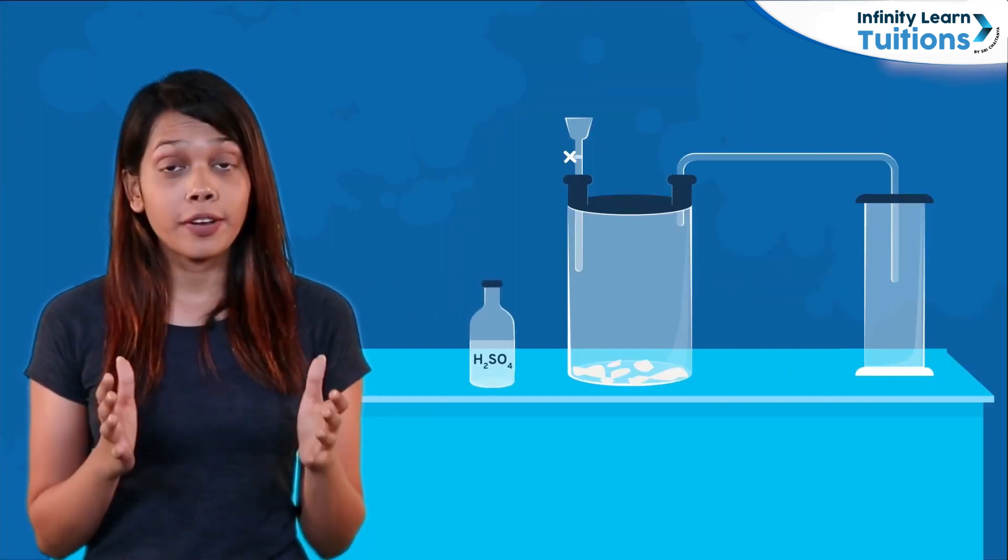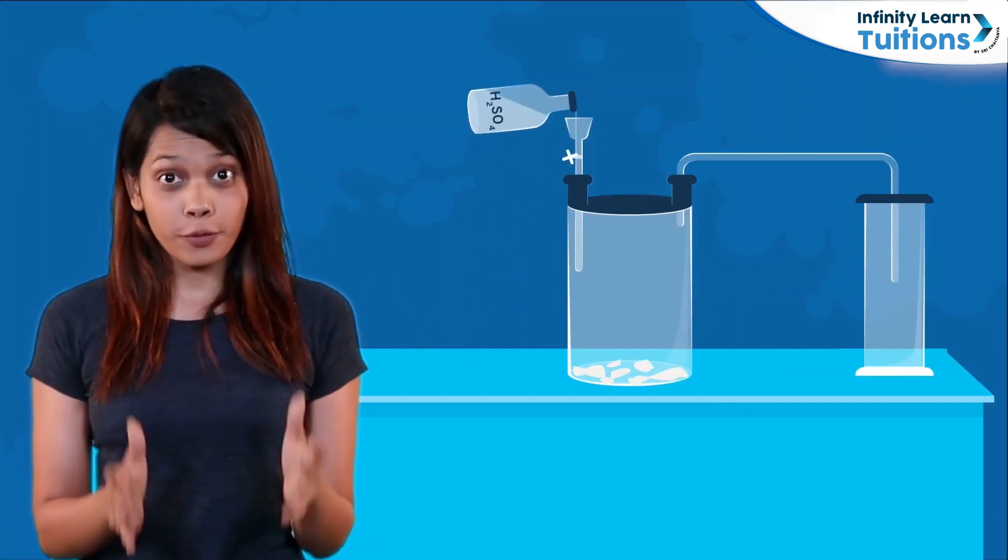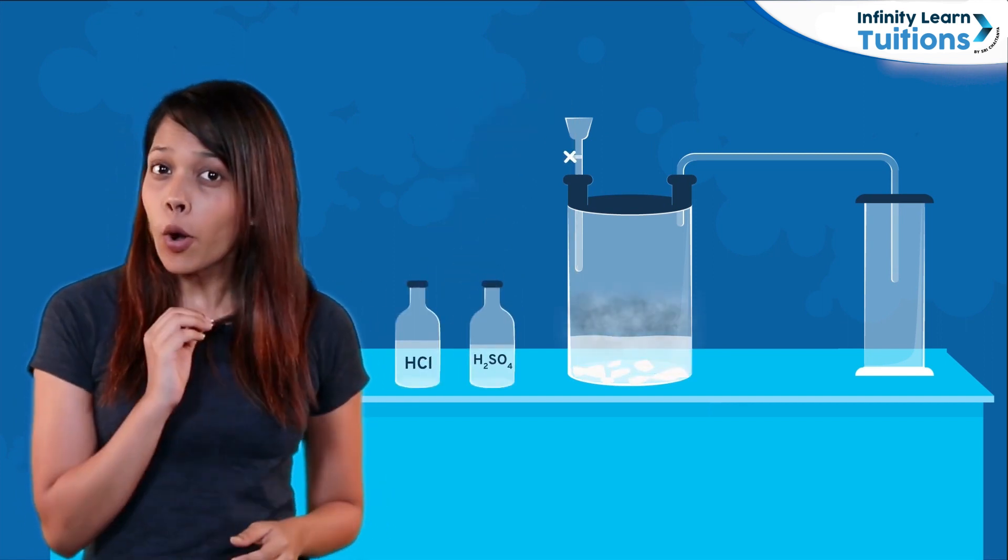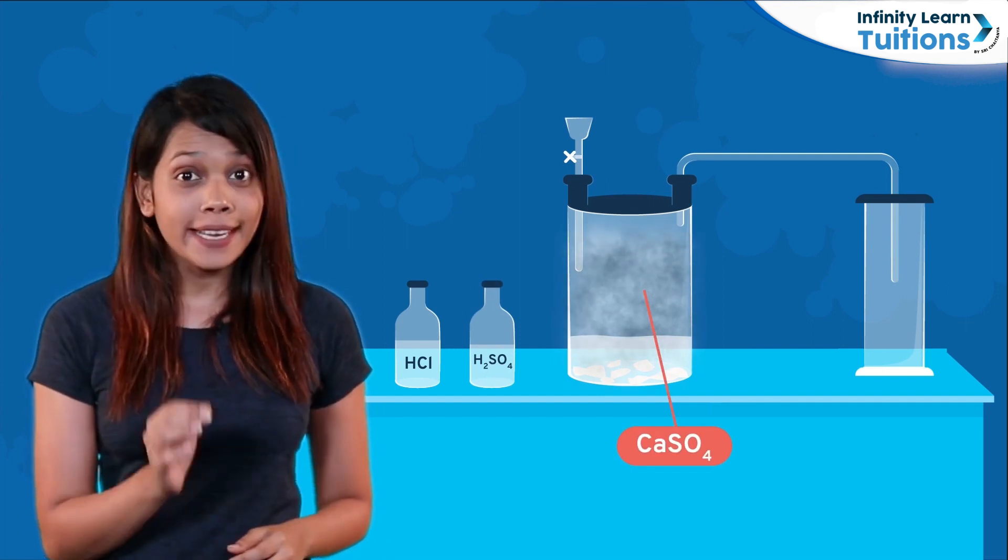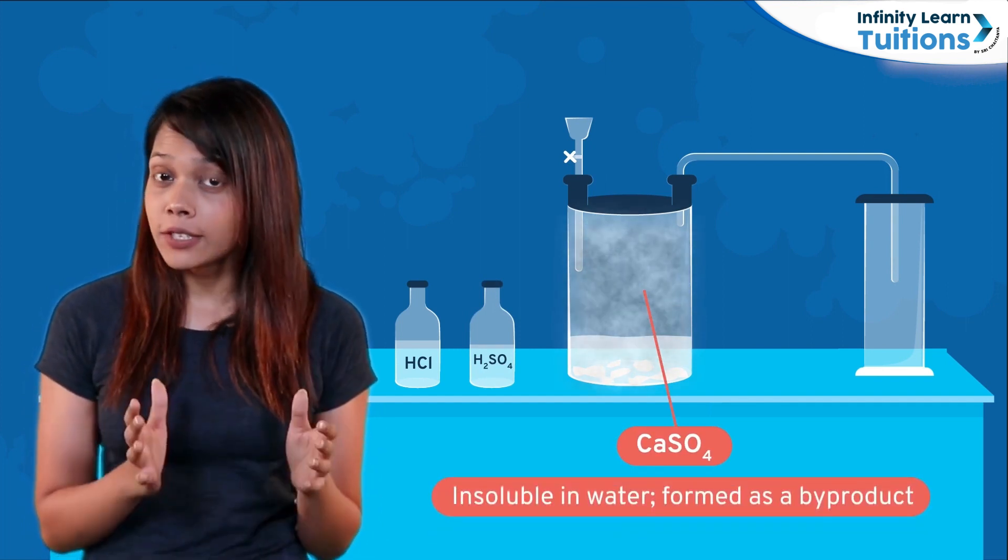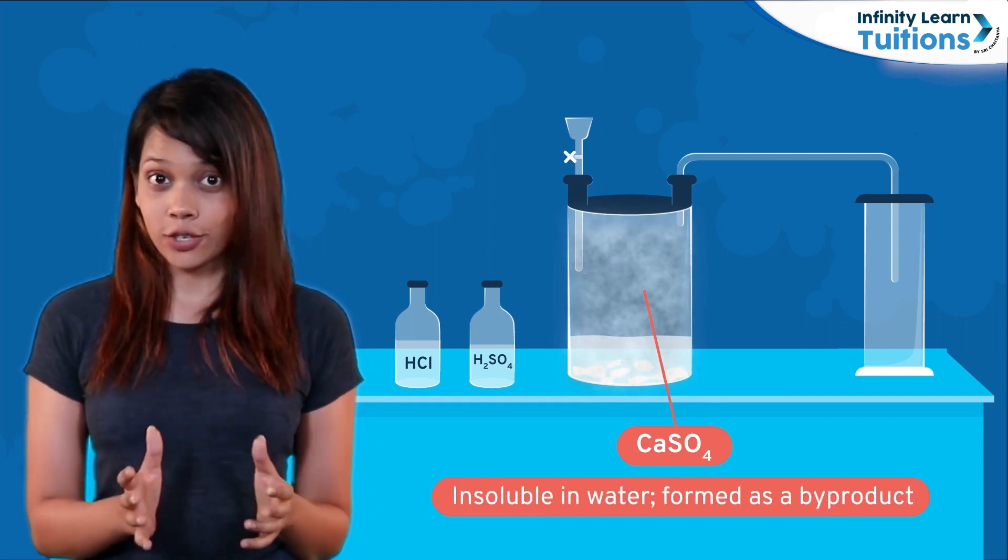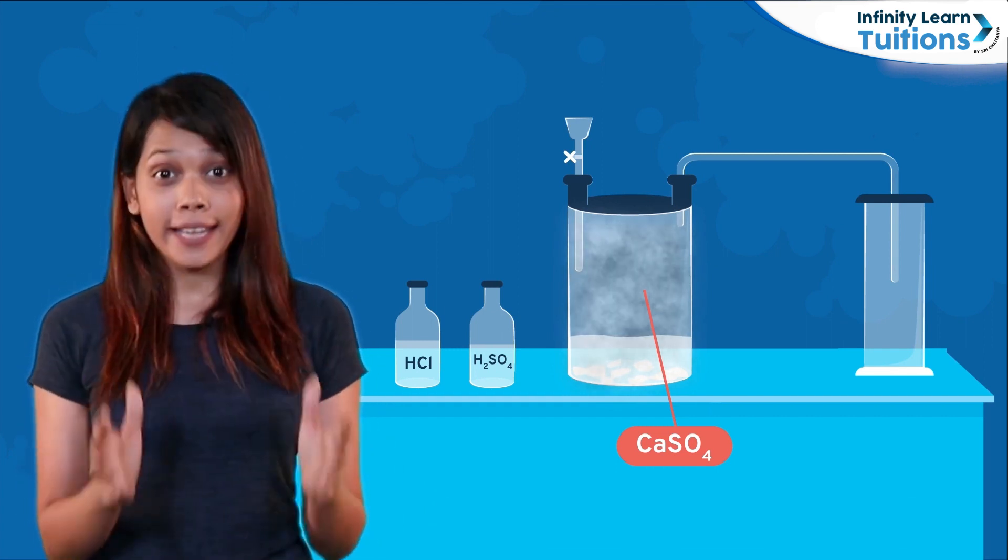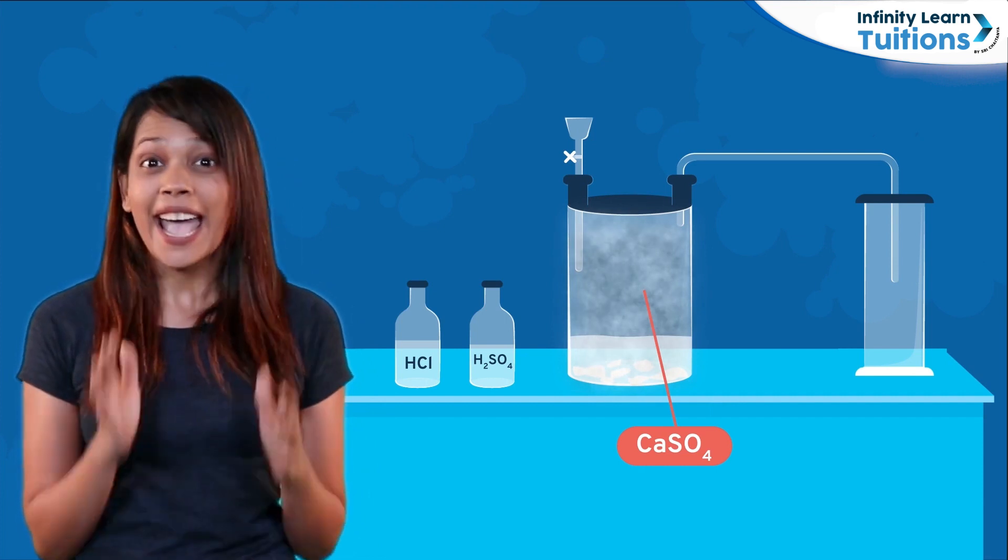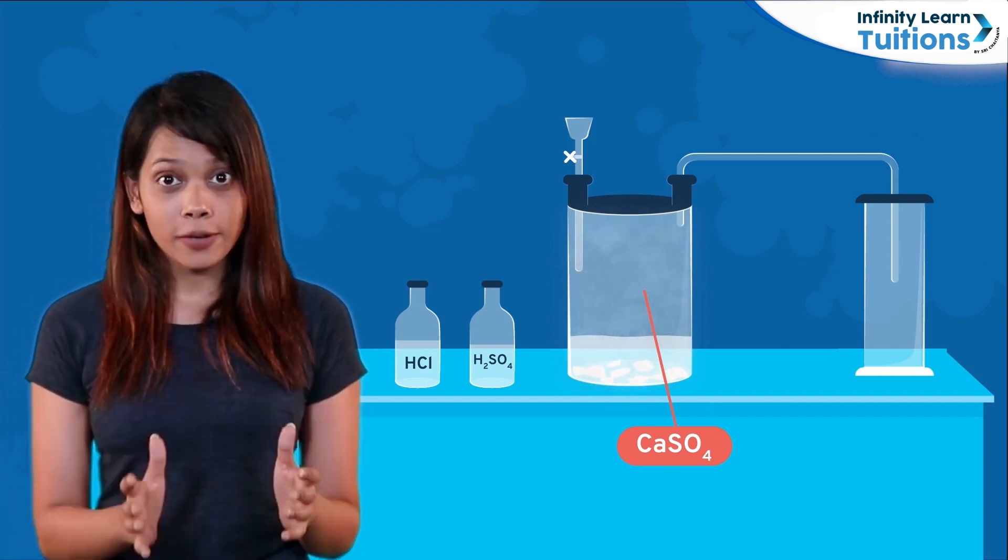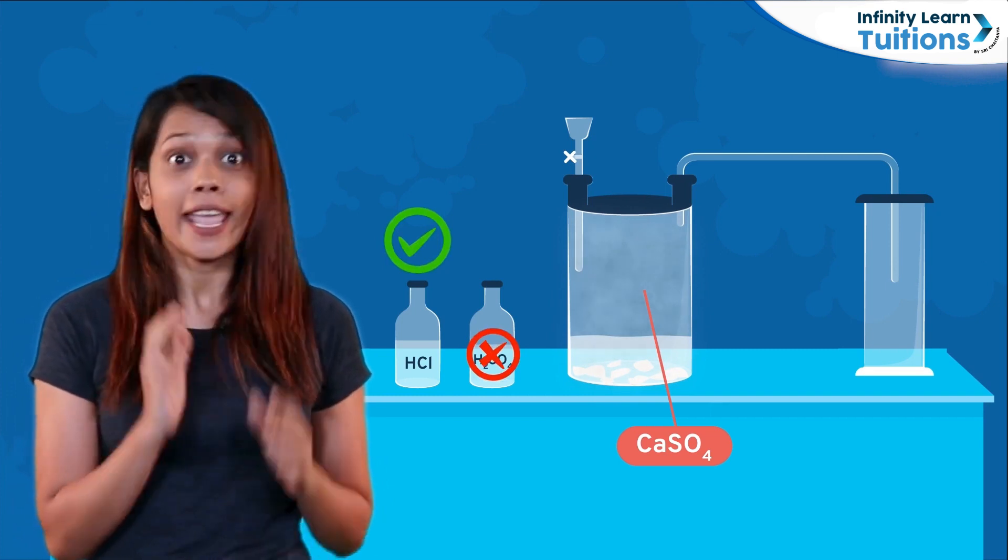To produce carbon dioxide, we could also use sulphuric acid or H2SO4 instead of dilute hydrochloric acid. But this also produces calcium sulphate or CaSO4, which is insoluble in water and formed as a by-product during the reaction. It thus forms a layer above the marble chips and stops the reaction. So for production of carbon dioxide, hydrochloric acid is preferred.